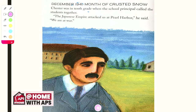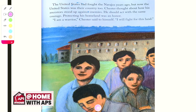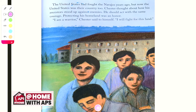Chester knew he might need to live in the white man's world one day. Speaking English was essential, so he worked hard and did well. Chester enjoyed learning and wanted to prove his worth. He also learned to pray the Catholic way and served as an altar boy. The Catholic way was good, but so was the Navajo way. Though he spoke English in school, Chester kept his love for the Navajo people and their language. He decided to never break the ties that bound them. December 1941, month of crusted snow. Chester was in 10th grade when the school principal called the students together. 'The Japanese Empire attacked us at Pearl Harbor. We are at war.'